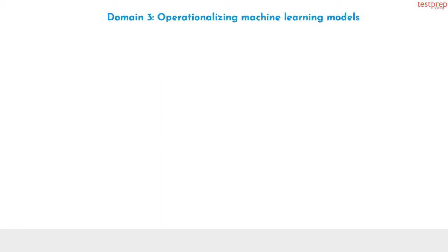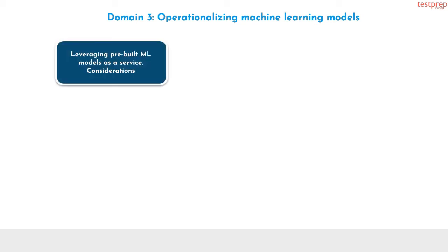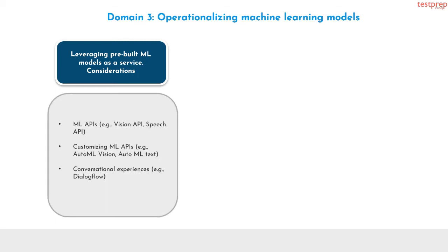Module 3, operationalizing machine learning models. Number 1, leveraging pre-built ML models as a service. It contains 3 subtopics: first, ML APIs, for example Vision API, Speech API; second, customizing ML APIs, for example AutoML Vision, AutoML Text; third, conversational experiences, for example Dialogflow.